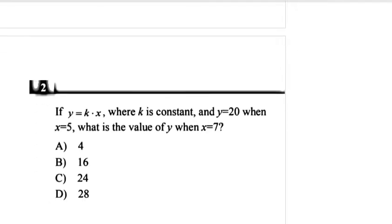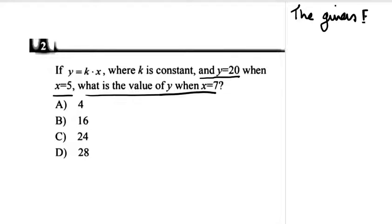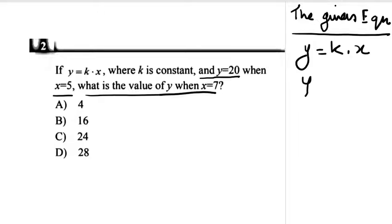Let's move on to our second question. It's given: if y is equal to k into x, where k is a constant, and the value of y is given as 20 and the value of x is given as 5. What is the value of y when x is equal to 7? First, let us find out the constant. The given equation is y is equal to k dot x. So y is 20 and x is 5. So, this is 20 is equal to k dot 5.